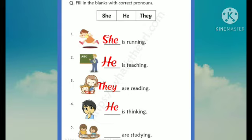Next, the next sentence is blank is thinking. In fourth picture, a boy is thinking. For the word boy, we use he.